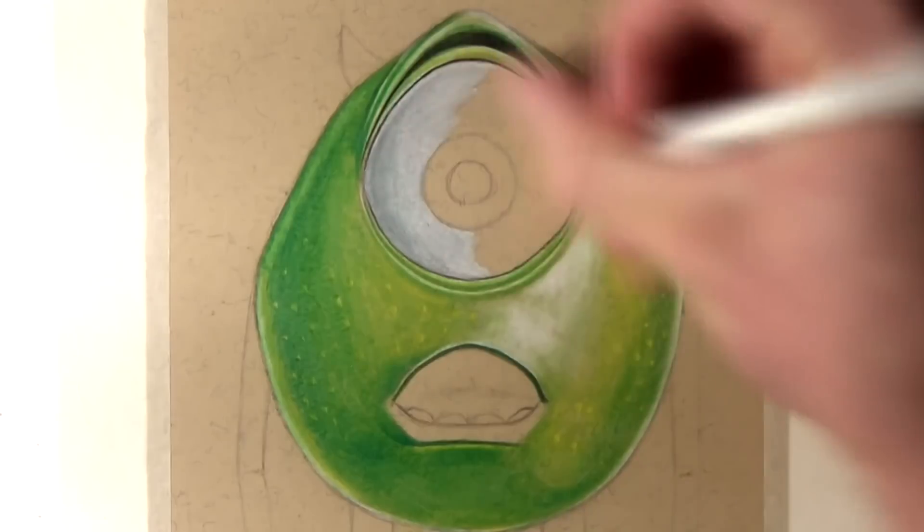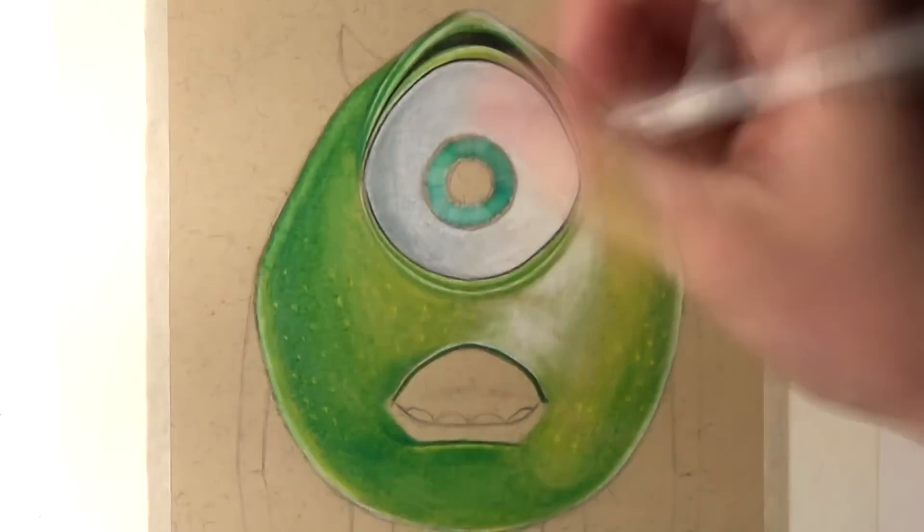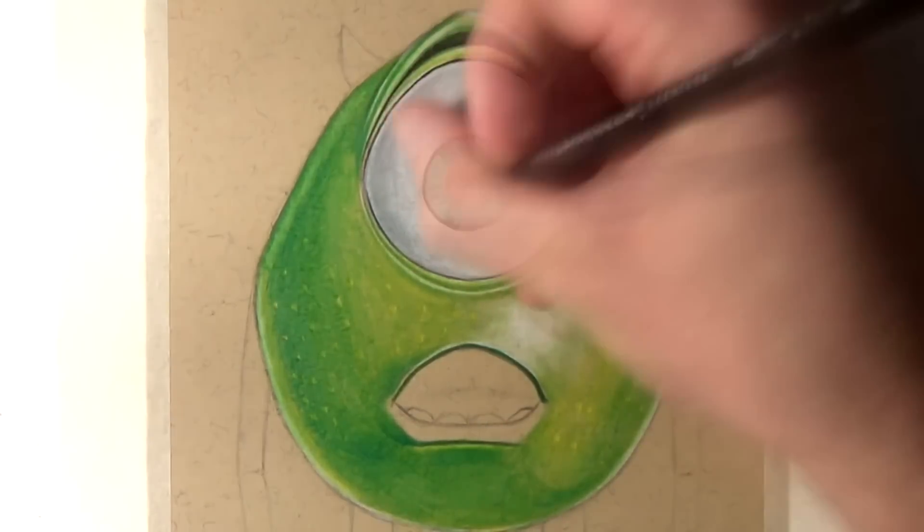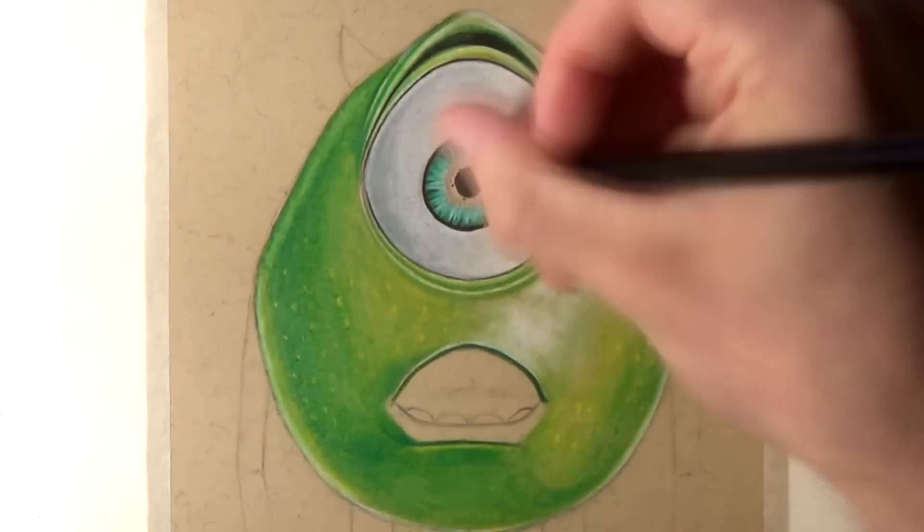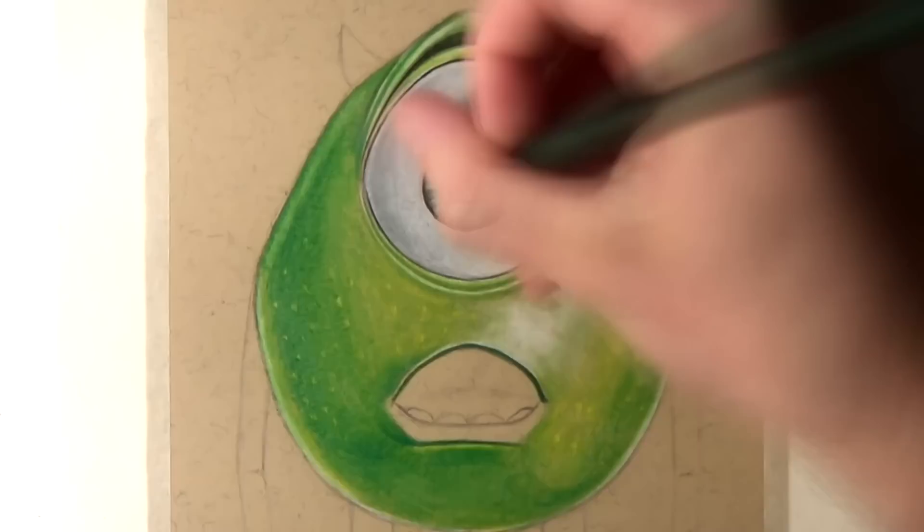And then to create his eye color I used grass green and a light cerulean blue and I blended both of those colors together with a white Prismacolor pencil and then after that I added the detailing with a black Prismacolor pencil and I also added the dark outline around the edges.